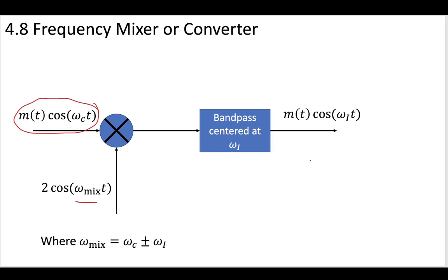After we mix these two signals together by multiplying them, we put the result through a bandpass filter centered at our intermediate frequency of interest. The resulting output is a message that is now modulated at our intermediate frequency. So using this method — multiplication plus a bandpass filter — we have changed the modulating frequency from ω_c to ω_i.